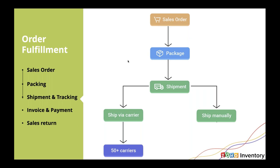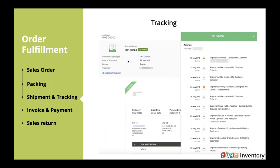If you do ship manually, we are integrated with AfterShip, which is an online shipment tracking provider that integrates with almost 450-plus different shipping carriers. You can simply put in your tracking ID and we will track the package from the point where it leaves the warehouse until it reaches the customer's destination, and we will also send out notifications of where the package has reached.